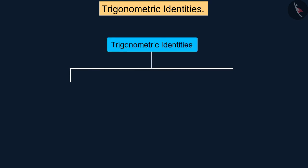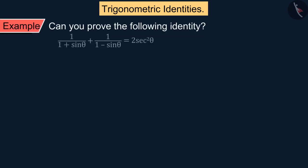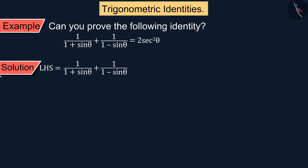Using these three identities we can express each trigonometric ratio in terms of other trigonometric ratios. Let us understand this by an example. Can you prove the following identity? Let's discuss its left side first.